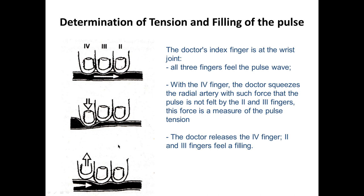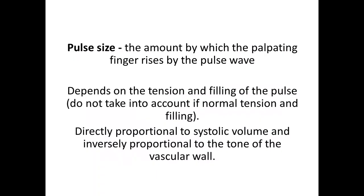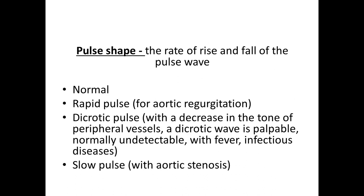With the fourth finger, the doctor squeezes the radial artery with such force that the pulse is not felt by the second and third fingers — this force is the measure of pulse tension. Then the doctor releases the fourth finger, and the second and third fingers feel the pulse filling. Pulse size is the amount by which the palpating fingers rise with the pulse wave, depending on tension and filling. Pulse shape — the rate of rise and fall of the pulse wave — can be normal, rapid, dicrotic, or slow.